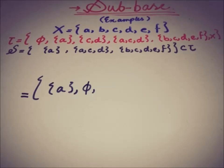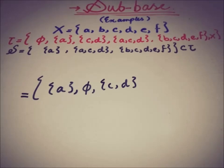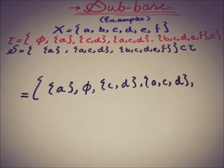ACD intersected with BCDEF is CD, and the intersection of ACD with itself is ACD. Now, the intersection of BCDEF with A is the empty set — already in the set. The intersection of BCDEF with ACD is CD, and the intersection of BCDEF with itself is that set again.